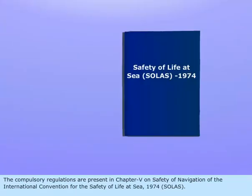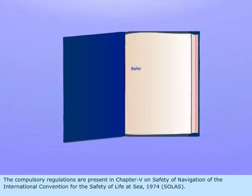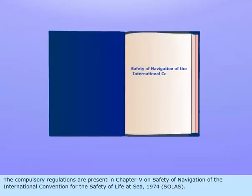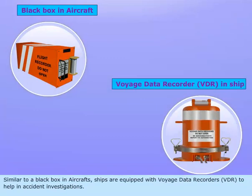The compulsory regulations are present in Chapter 5 on Safety of Navigation of the International Convention for the Safety of Life at Sea. Similar to a black box in aircrafts, ships are equipped with Voyage Data Recorders to help in accident investigations.